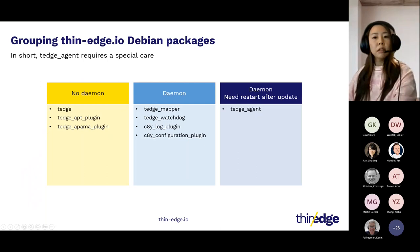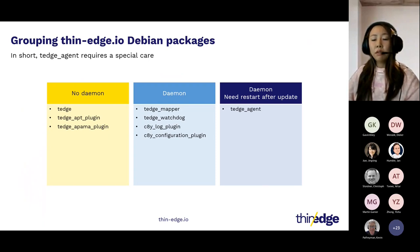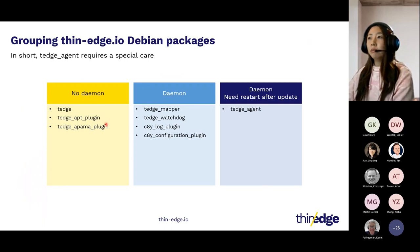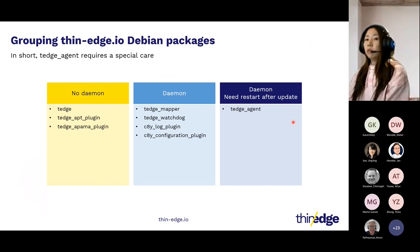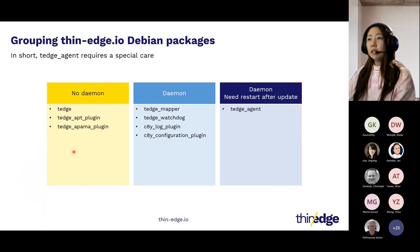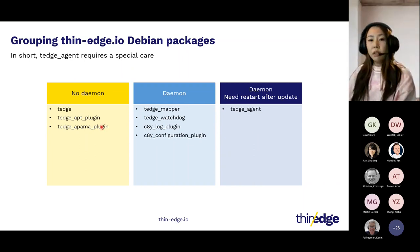Now let's look at all the Thin Edge packages to understand the difference and difficulty of self-update. As of today, we release eight different Debian packages. We can group them into non-daemon and daemon packages. Daemon packages are managed by an init system such as systemctl on Debian OS or Ubuntu. Updating a non-daemon package — like the Thin Edge package I just updated — is quite straightforward. There is no background process, so we can update these packages anytime.